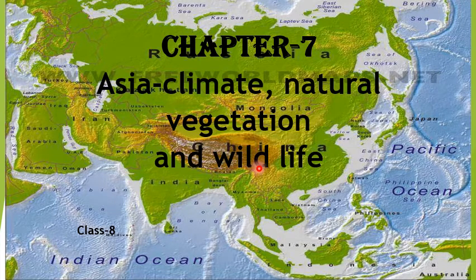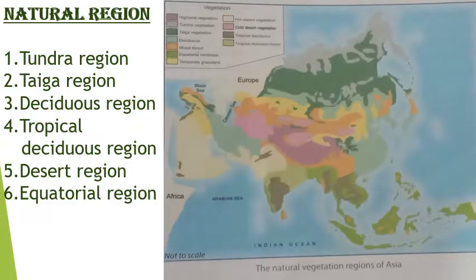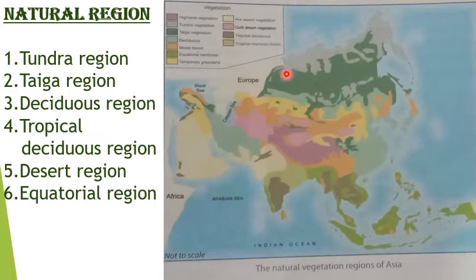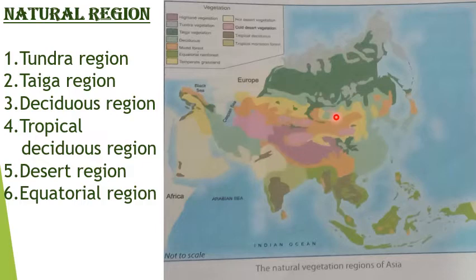Asia is divided into various natural vegetation regions which are based on the richness and the type of flora found in each of them. The word flora means plants and fauna means animals. Various natural regions of Asia are the Tundra region and Taiga region, both found in the northern part of Asia. Tundra is shown by grey colour and Taiga by dark green colour. Desertic vegetation is found in the central part of Asia. Steppes are also found on the west and eastern part of Asia.